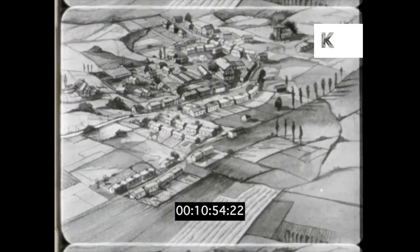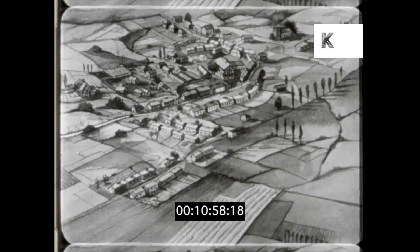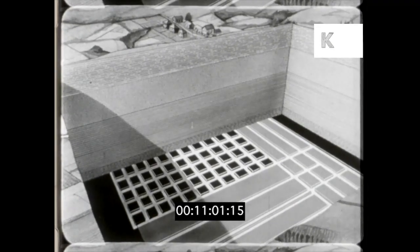For example, here is a small town whose buildings may be damaged if the ground sinks. Down below the board and pillar method is used to prevent such damage.